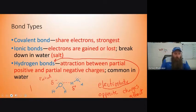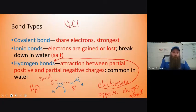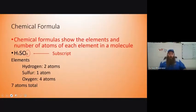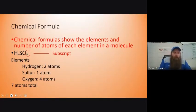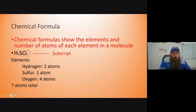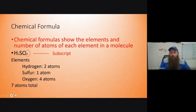A chemical formula shows the number of elements and atoms in a molecule using subscripts. A subscript is a smaller letter written below the element symbol — sub means below, script means to write. The subscript tells you how many of each atom there are. In H2SO4, we have two hydrogens, one sulfur, and four oxygen atoms — seven total atoms in that one molecule.